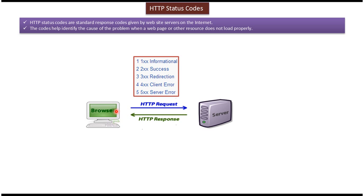Suppose a client sends an HTTP request to the server, and the server receives the request. After that, if the server wants to send some information to the client, then along with the HTTP response, the server will send a 100 series informational status code to the client.